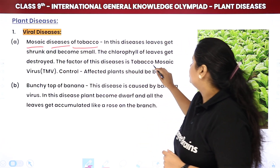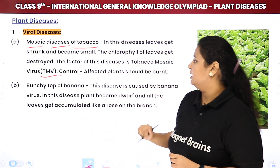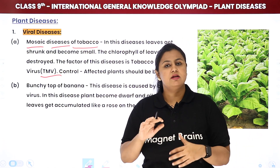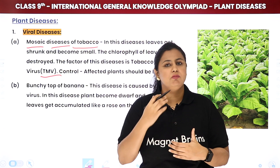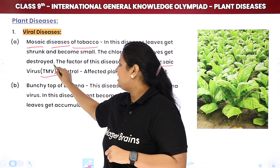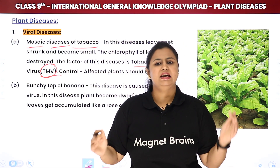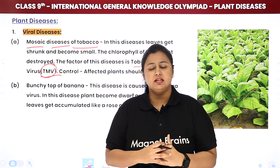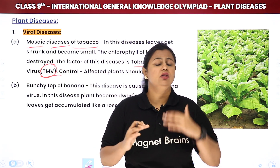The causative agent of this disease is Tobacco Mosaic Virus, called TMV. The biggest problem with this virus is that it mutates very quickly — it reproduces, multiplies, and mutates rapidly. To control TMV, affected plants should be burnt so that the disease does not spread to other plants.